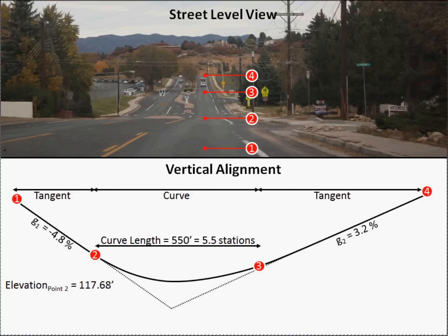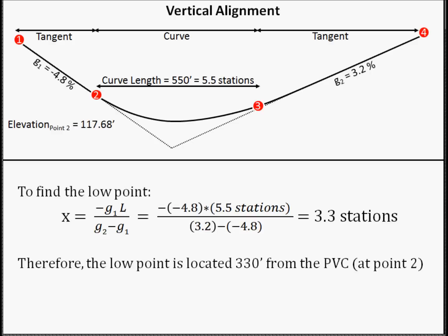This example shows two perspectives: a street level view in the top portion of the screen, and the vertical alignment on the bottom of the screen, which takes a profile perspective. The PVC at point 2 is preceded by a tangent with a grade of negative 4.8%, known as the entrance grade, and the PVT at point 3 is followed by a tangent with a grade of 3.2%, known as the exit grade. The length of the curve between point 2 and 3 is 550 feet, or 5.5 stations. Since this curve is a sag curve, we're looking for the low point. Using the equation we derived earlier, we input G1 as negative 4.8, G2 as 3.2, and L as 5.5 stations. Grades are input as percent and lengths as stations. The resulting answer is 3.3 stations, meaning the low point occurs at 3.3 stations, or 330 feet from the PVC at point 2.